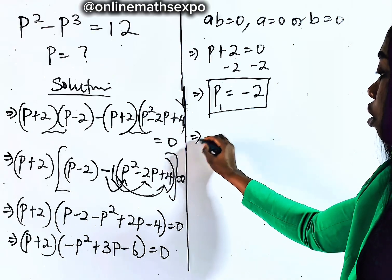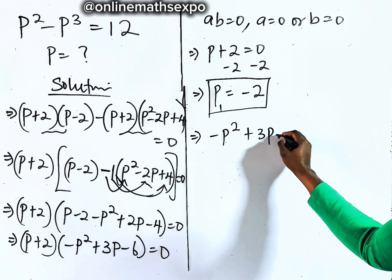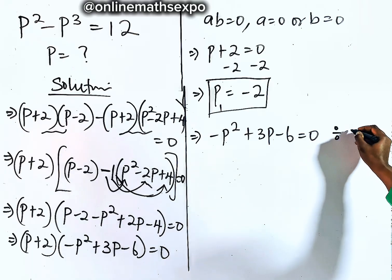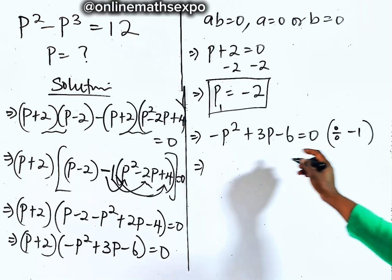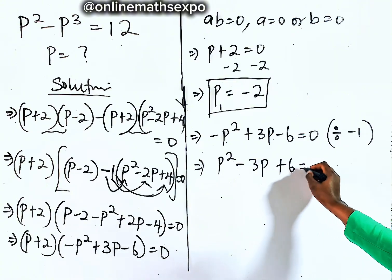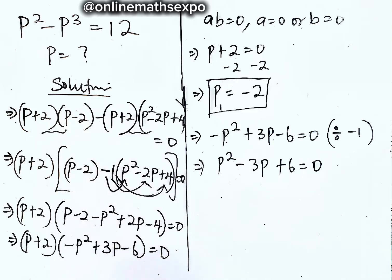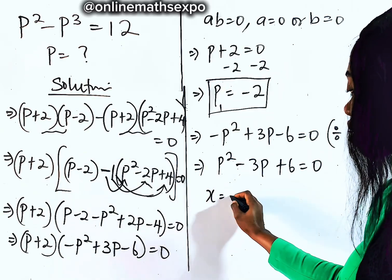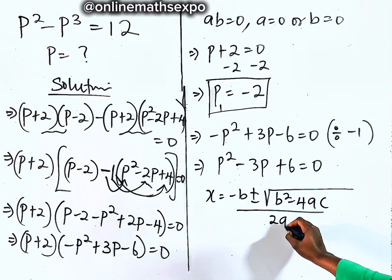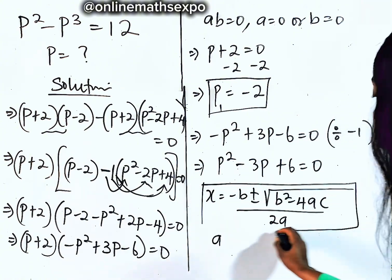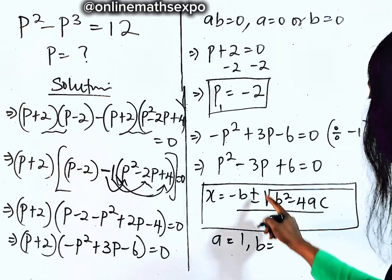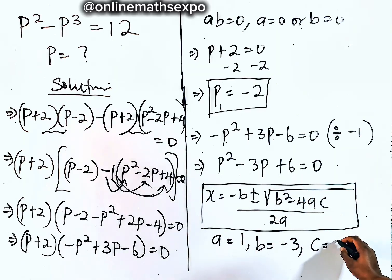For the second factor, we have negative P squared plus 3P minus 6 equals zero. Dividing each term by negative one gives us P squared minus 3P plus 6 equals zero. This is our quadratic equation. Using the quadratic formula, X equals negative B plus or minus square root of B squared minus 4AC, divided by 2A. Here A equals one, B equals negative three, and C equals six.